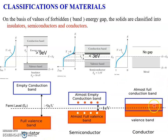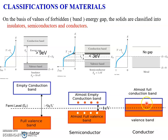In the case of a conductor, there is no gap between the conduction band and the valence band. Sometimes you can also see overlapping of the conduction band and the valence band. We can find a huge number of free electrons because even for a very, very small amount of energy, electrons can jump from the valence band to the conduction band, so electricity passes very easily in this type of material.